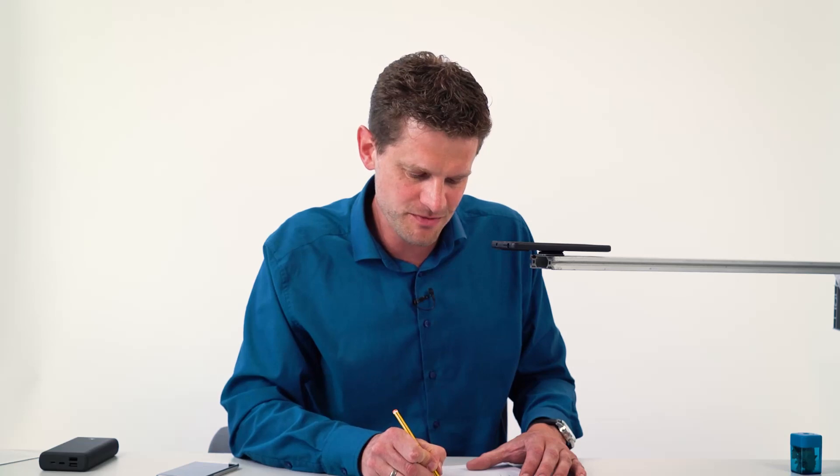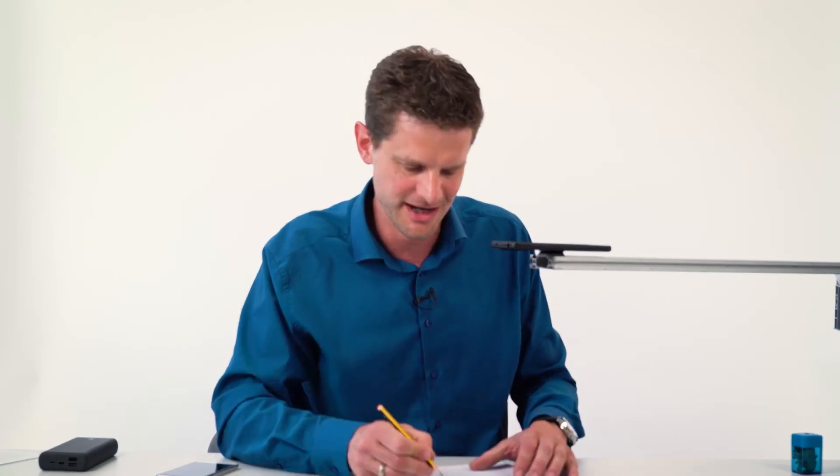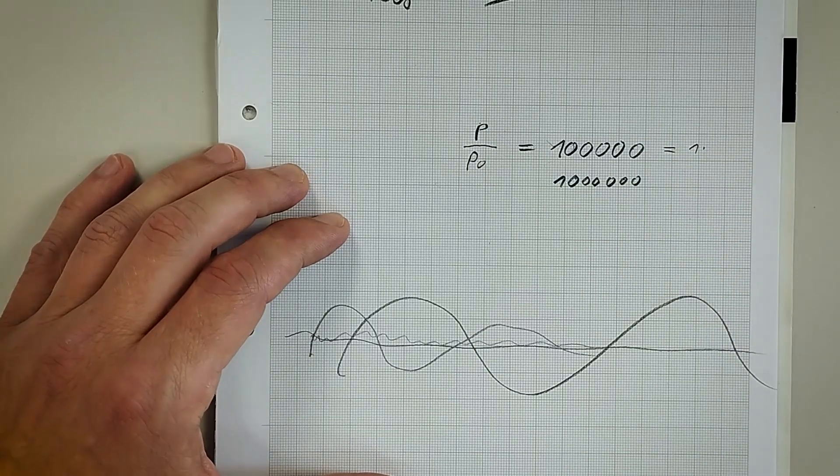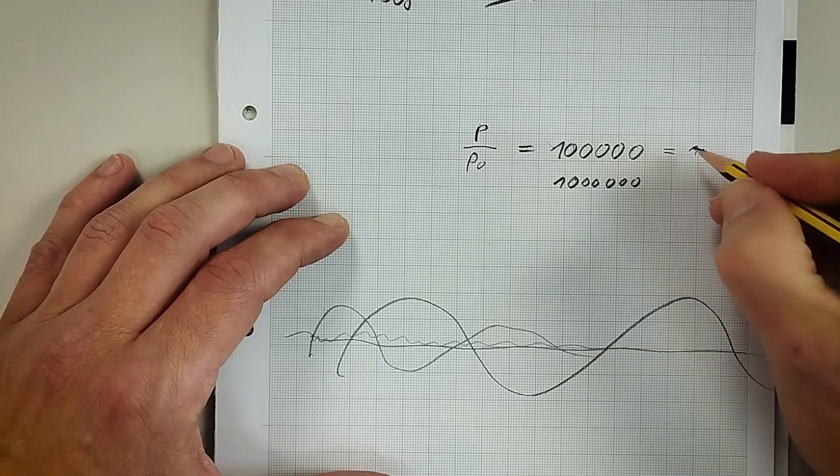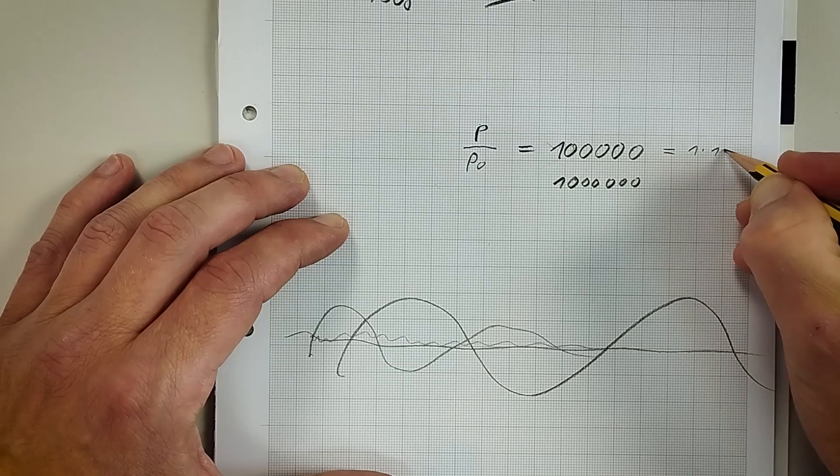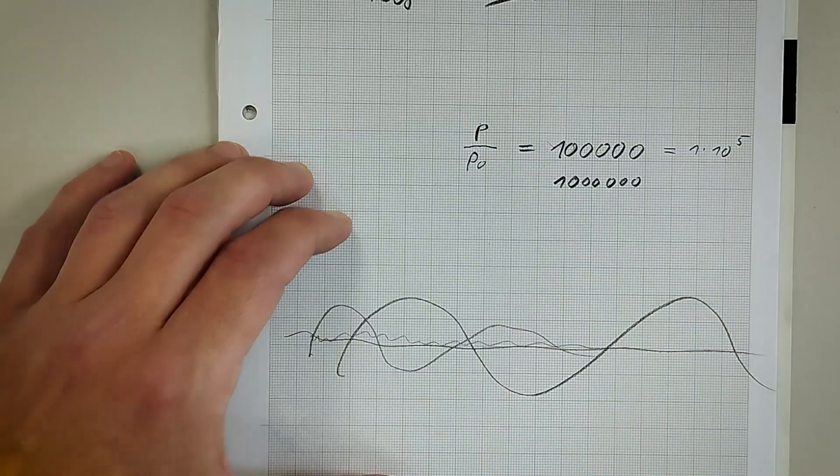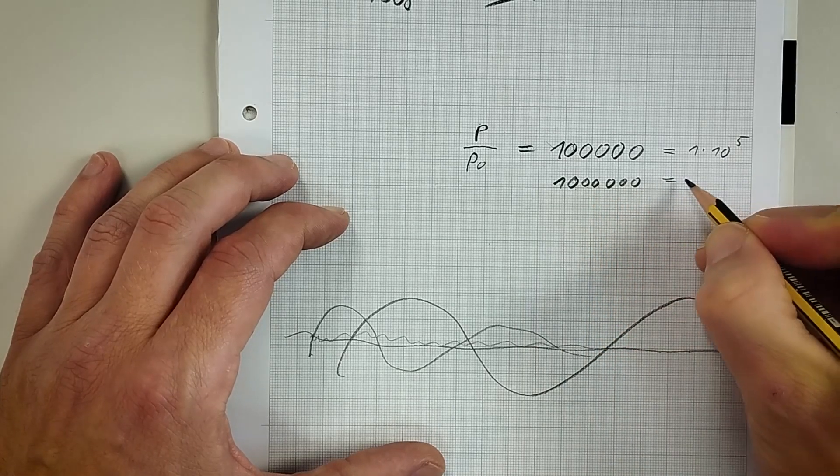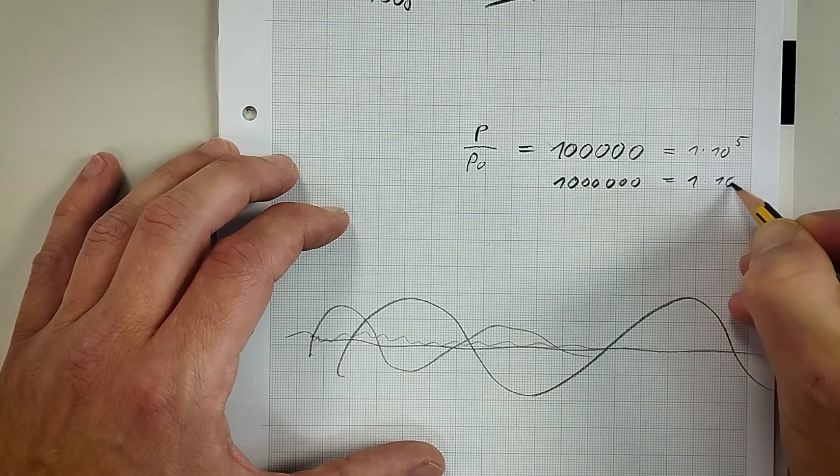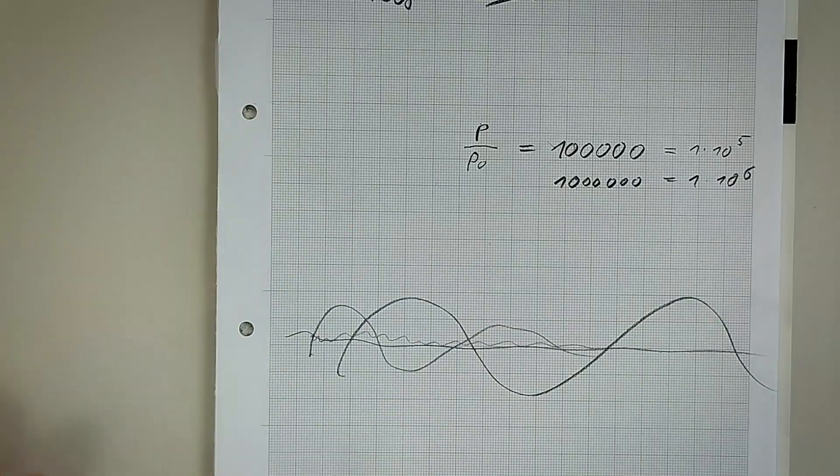So then the engineer would be clever and say, write this down as a one-digit number. So this is a 1. And how many times should I have to multiply this with a 10? So this is 5. So 10 should be added five times. Then it's the same number. And this is 1, 2, 3, 4, 5, 6. So this is a 1 with six times multiplied with 10.